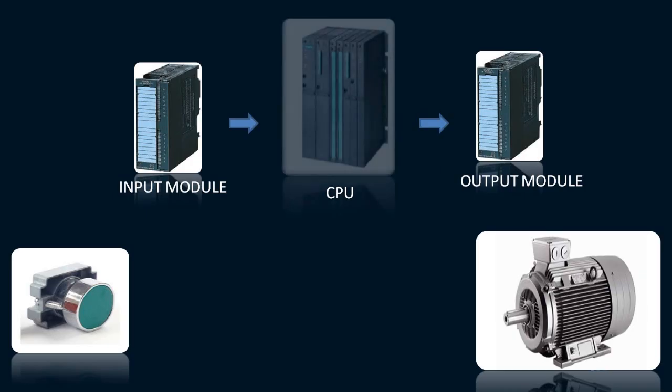To understand how it does that, let's take a simple example of a push button. If you push that button in the field, the PLC will read it and decide what to do based on the program given to it. For example, if the push button is programmed to start a motor, then the PLC will send a command to the output card.